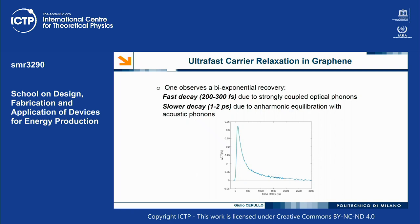The measurement shows the transmission of graphene first increases very quickly, and then recovers. There is a first very fast decay due to coupling with strongly coupled optical phonons, and then a slower decay due to equilibration with acoustic phonons. After a few picoseconds, the material has returned to its original condition — it is an ultrafast switch.